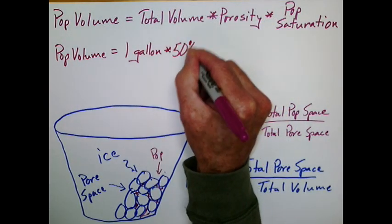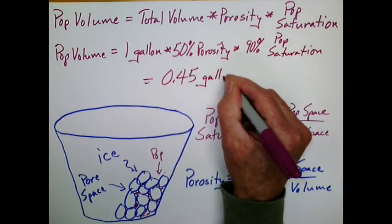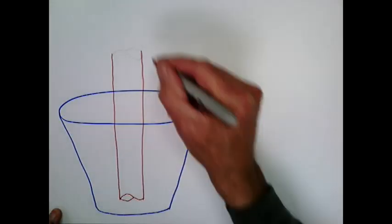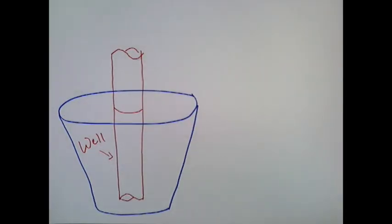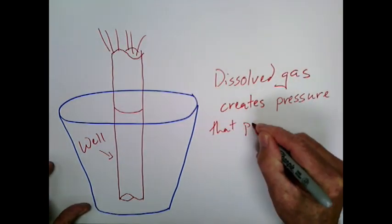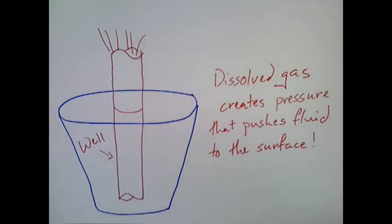In the end, it turns out we are getting less than half a gallon of pop, but we figure that will last us at least through intermission, so we buy it and drill a well, sticking a straw into our reservoir. When we first pop the top on the reservoir, the CO2 that is dissolved in the pop comes out as a gas and creates pressure that pushes the pop out of the straw.